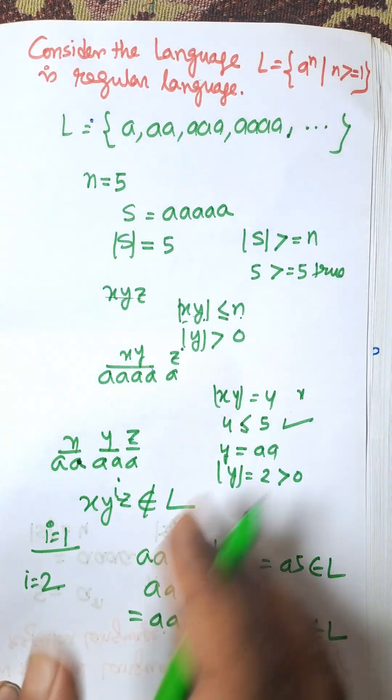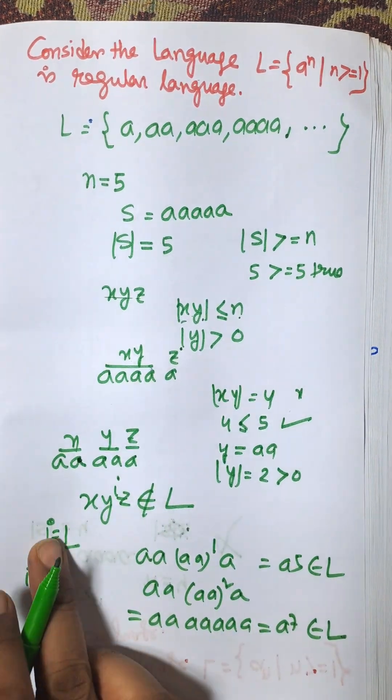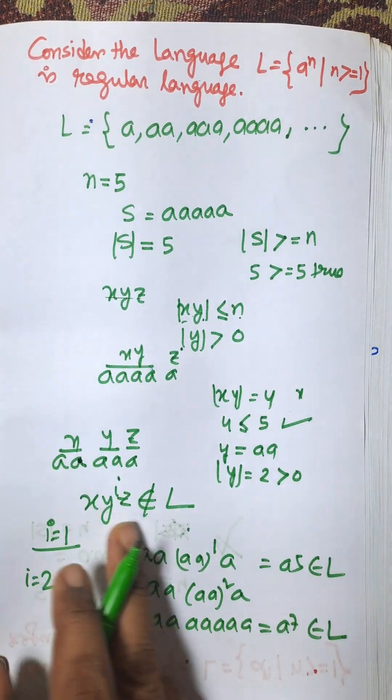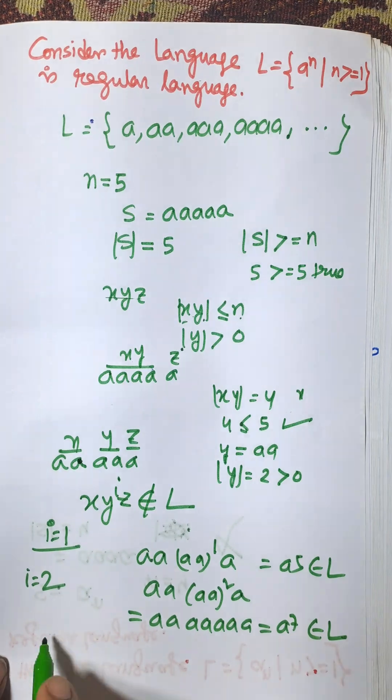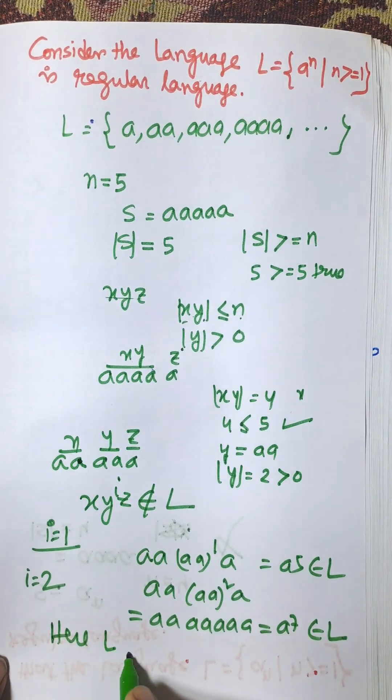So for every value of i, the grammar is regular. Here L is regular.